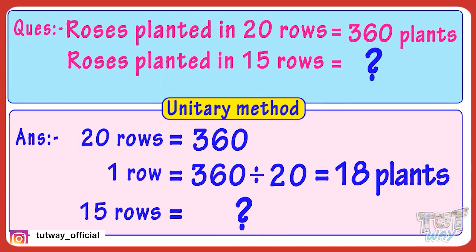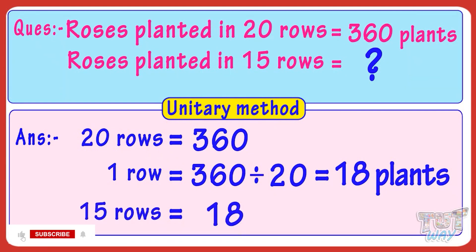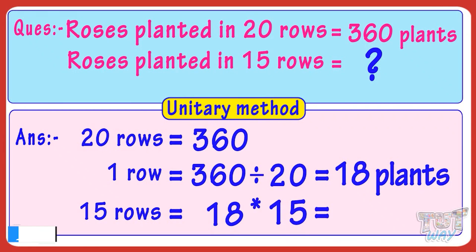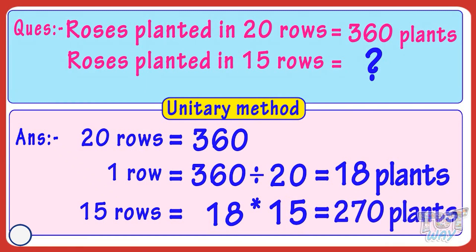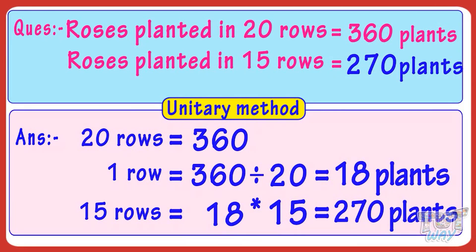So we have calculated that 18 rose plants can be planted in one row. For finding rose plants that can be planted in 15 rows, we multiply 18 by 15. 18 multiplied by 15 equals 270. So 270 rose plants can be planted in 15 rows.